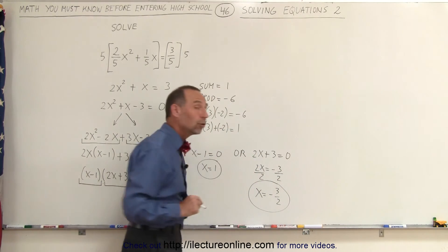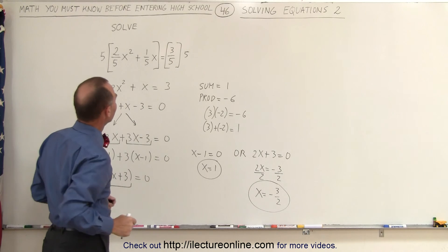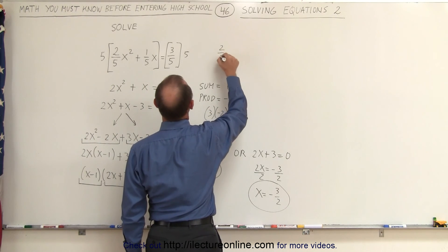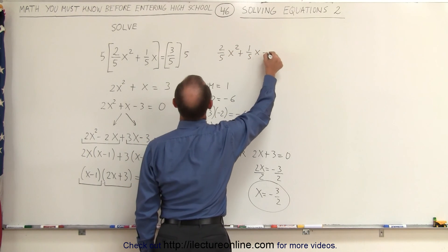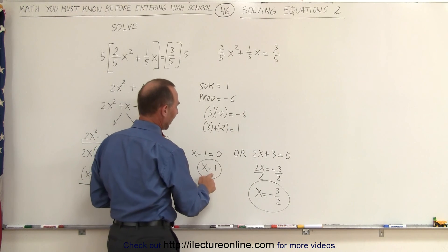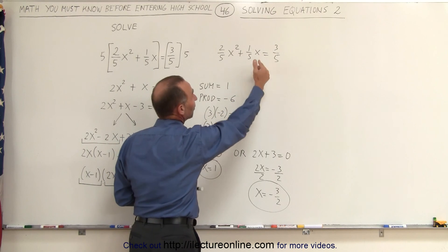That means either one of the two will solve this original equation. Of course, we kind of changed the original equation. Let's rewrite it again. We have 2 fifths x squared plus 1 fifth x equals 3 fifths. Notice that if we plug in the value of x equals 1, we get 2 fifths plus 1 fifth equals 3 fifths. That's correct.